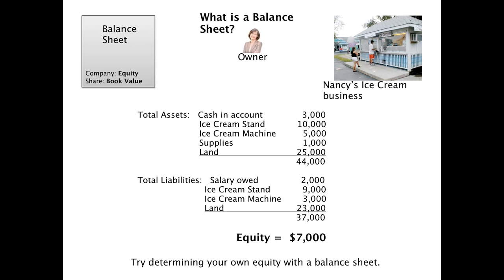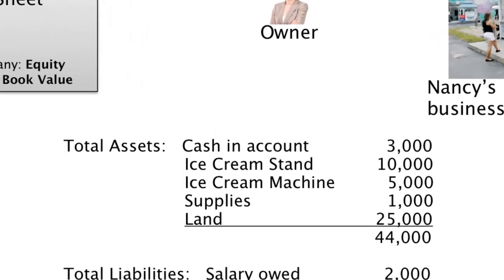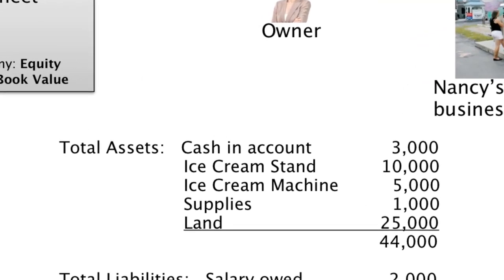Here I took a very generic balance sheet for Nancy's ice cream business. On the top, you can see the total assets. The cash in the account — Nancy has a corporate bank account and she has $3,000 on hand. Her ice cream stand is worth $10,000. The ice cream machine is worth $5,000. The supplies she has on hand right now is $1,000. And the land she bought to put her ice cream stand on is $25,000. When we sum up those assets, it's $44,000.